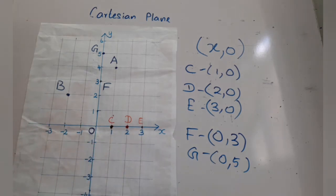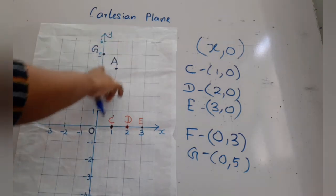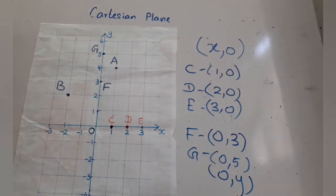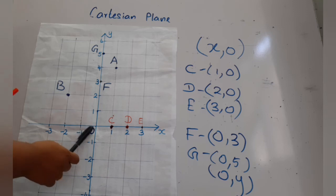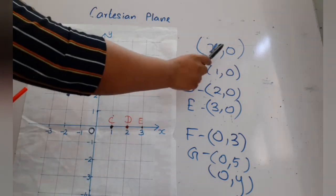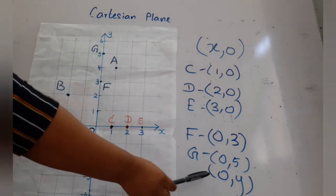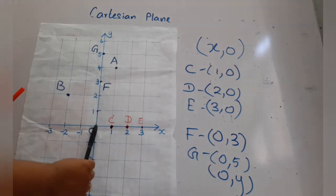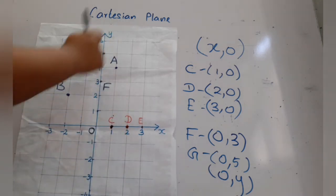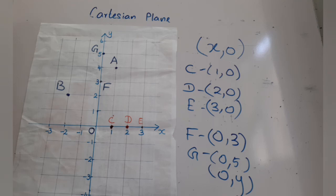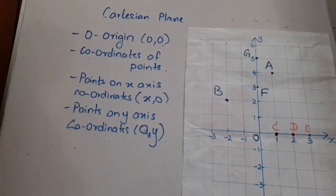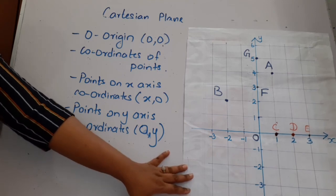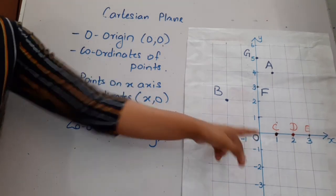As you can see, the coordinates of points on the y-axis take the format zero comma y. So coordinates of points on the x-axis take the value (x, 0) where y is zero, and coordinates of points on the y-axis take the format (0, y) where x is zero. The Cartesian plane is where two number lines intersect horizontally and vertically, and the point where they intersect is the origin O.